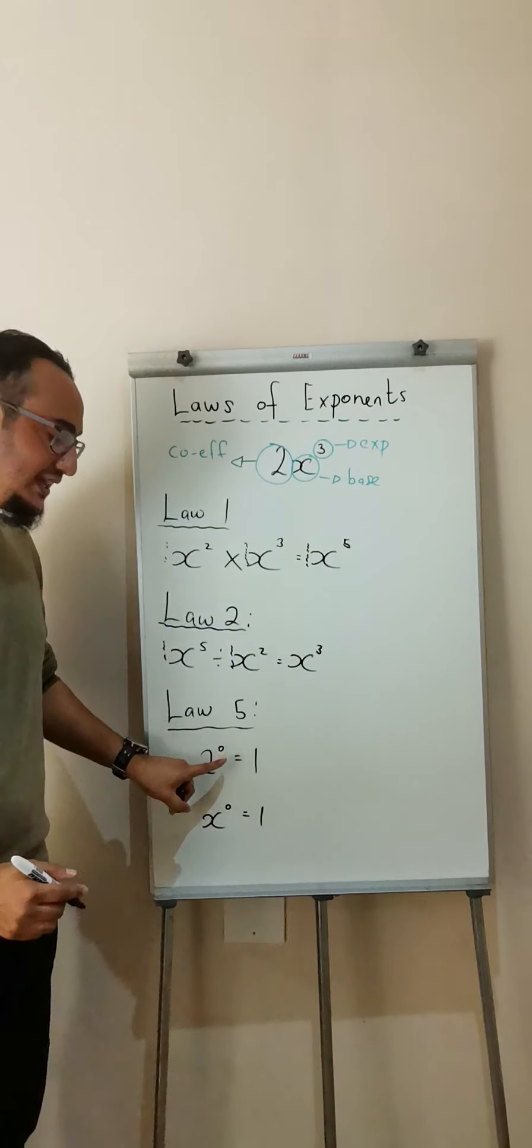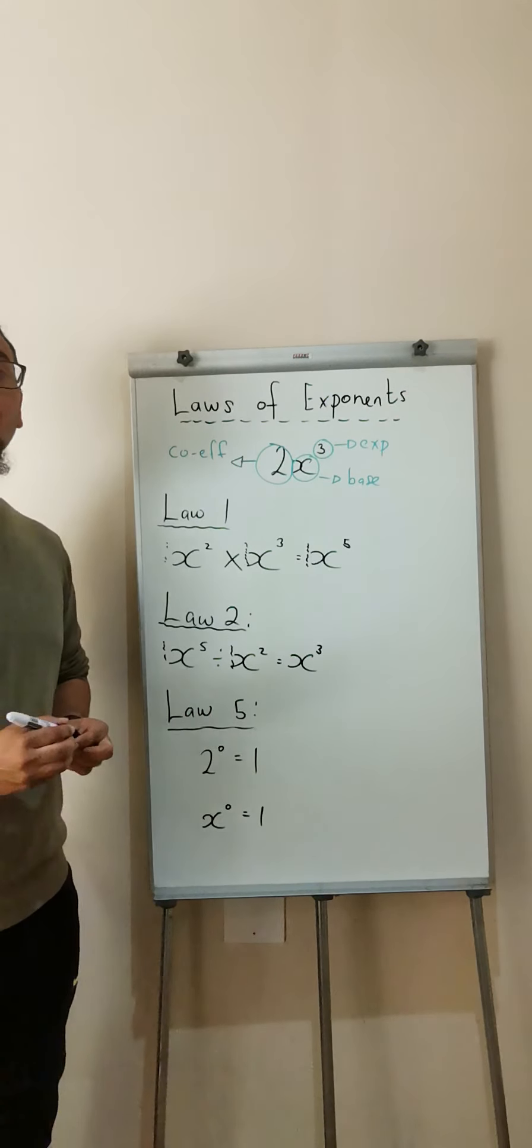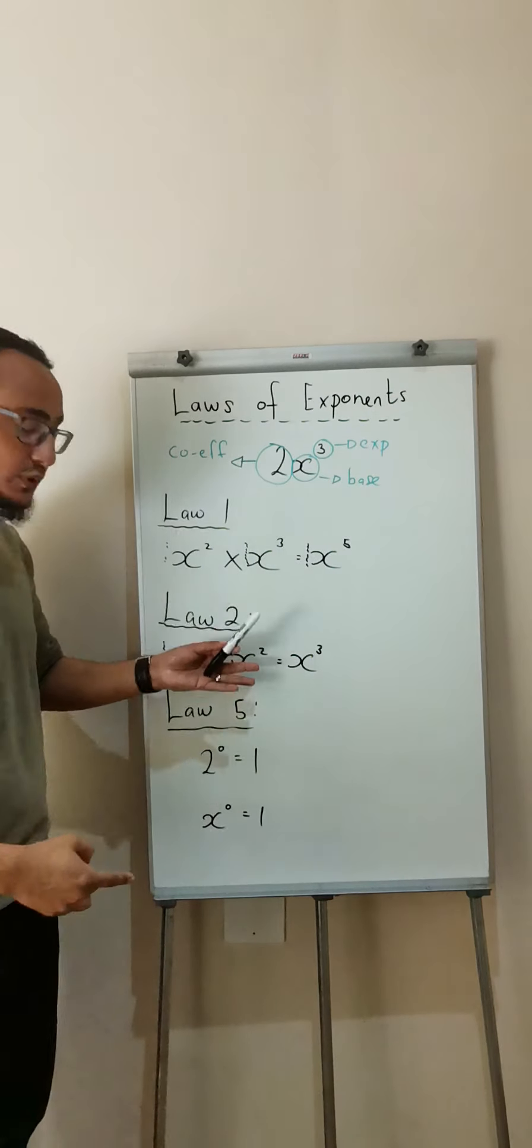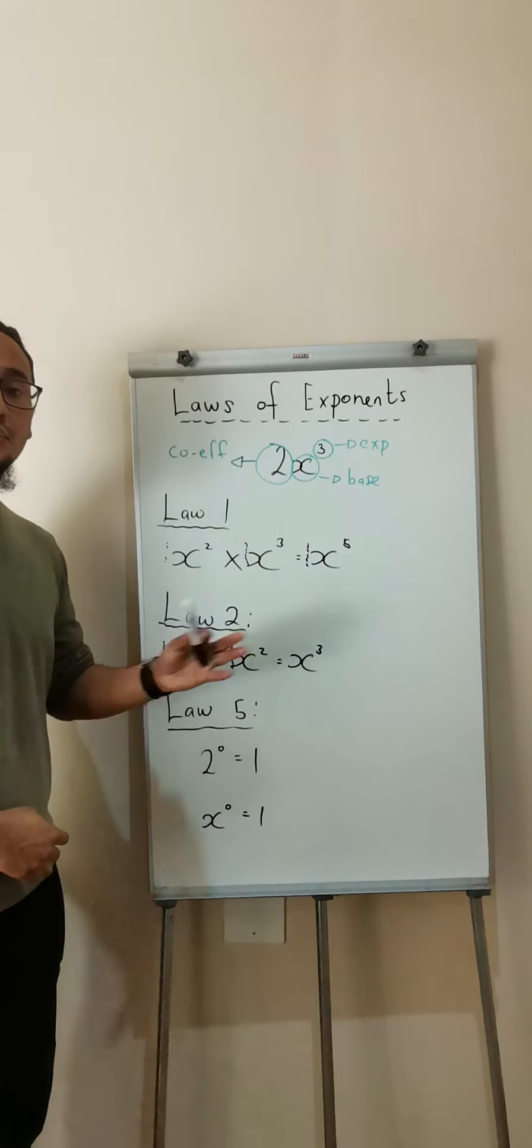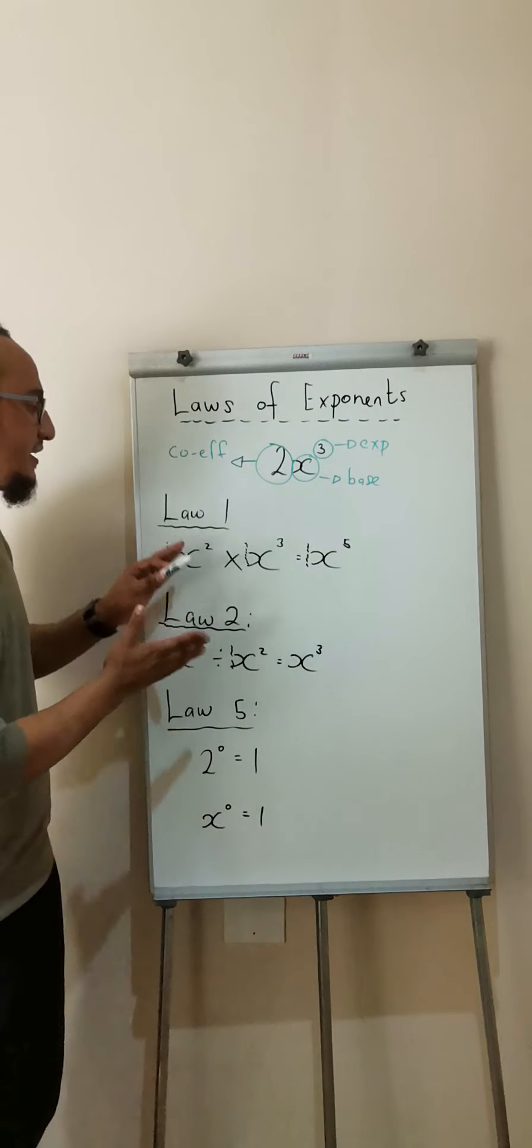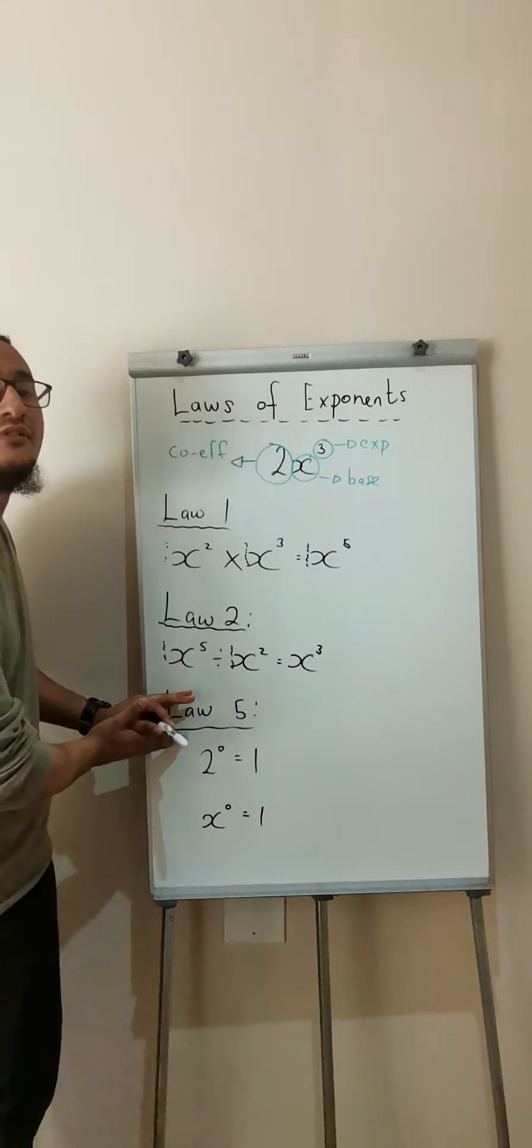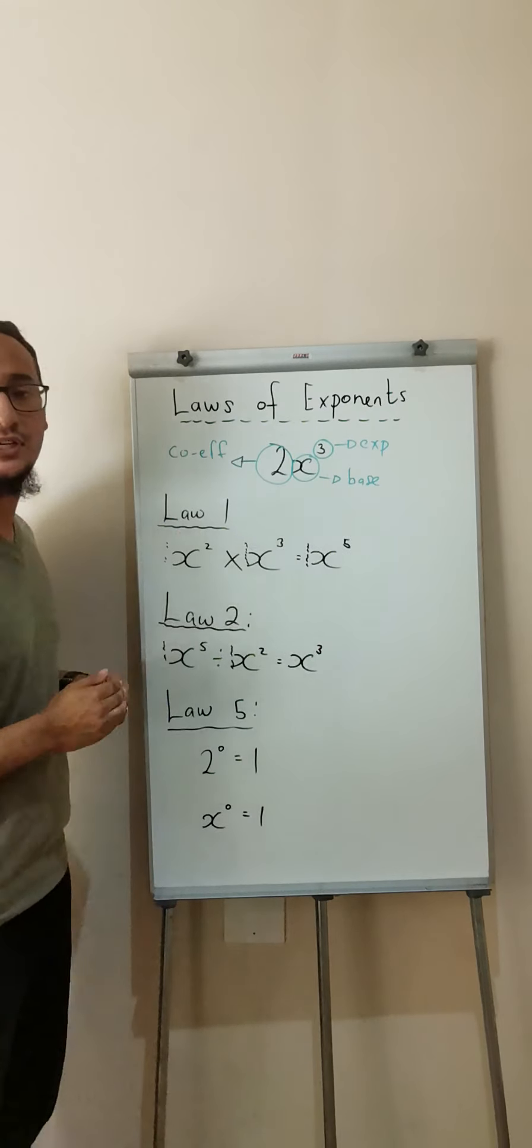And law number 5, anything to the power of 0 is equal to 1. 2 to the power of 0 is equal to 1. x to the power of 0 is equal to 1. From here we're going to apply law number 1, law number 2, and law number 5 into various examples.